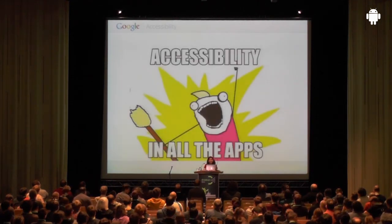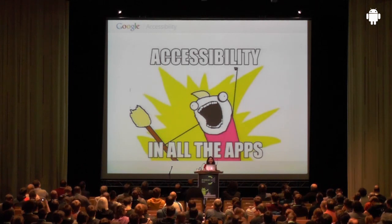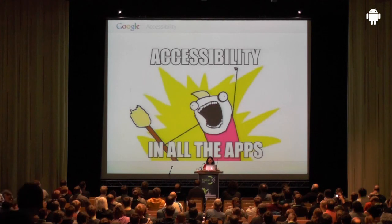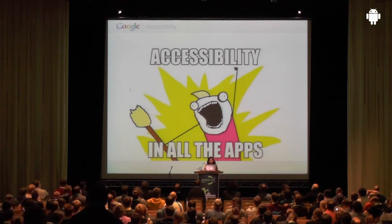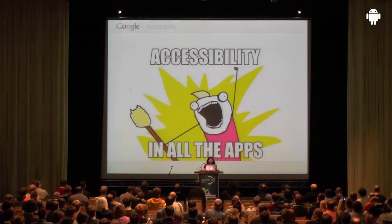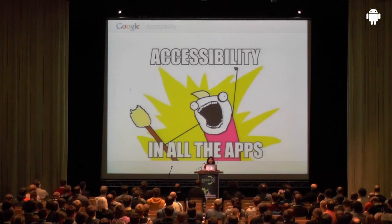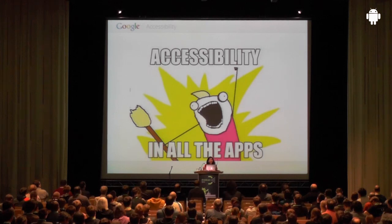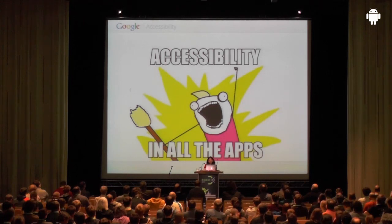Accessibility is the degree by which you make your applications available to as many people as possible. This term is generally used for people who have special needs — for example, if you cannot see too well or at all, if you cannot hear, or if you have motion impairment and cannot use pointing devices like a mouse, and instead rely on keyboard, trackball, or D-pad.